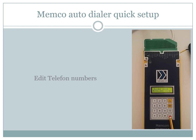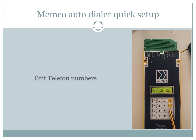Next, select whether the memcom will use guided voice when dialing. This means the memcom unit can transmit a pre-recorded message after the operator has answered the call. This message can contain the lift address or lift ID, for example. After selecting our choice, we will press H key again.